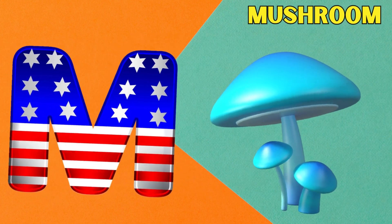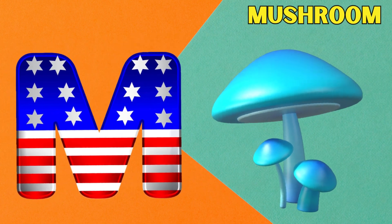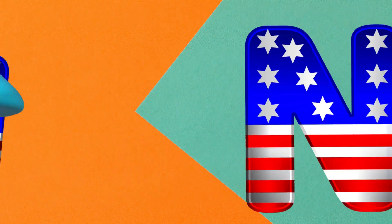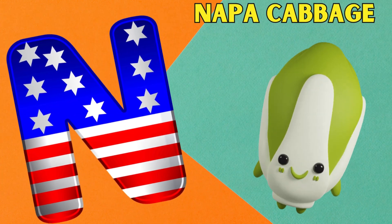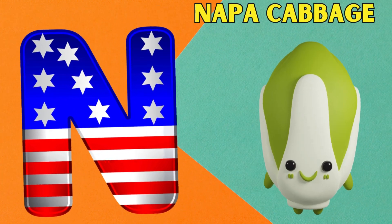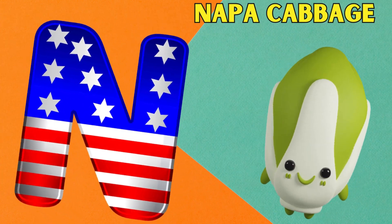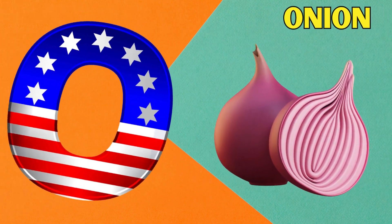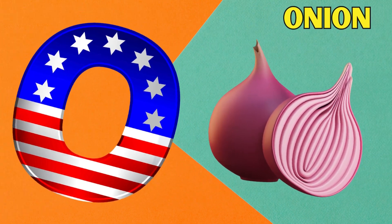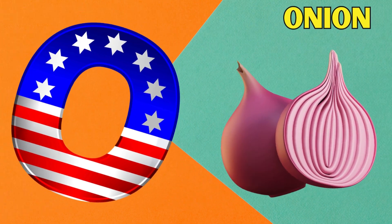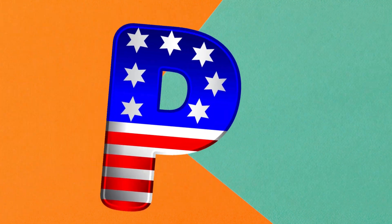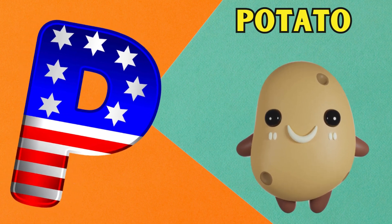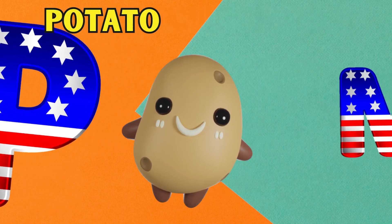M is for mushroom — muh, mushroom. N is for napa cabbage — nuh, napa cabbage. O is for onion. P is for potato — puh, potato.